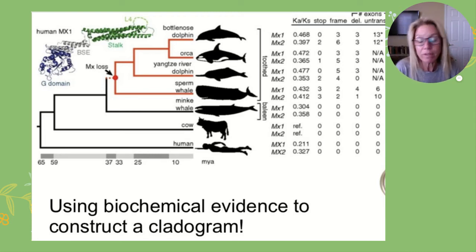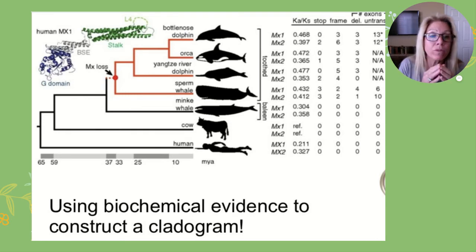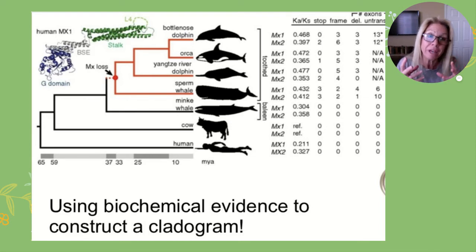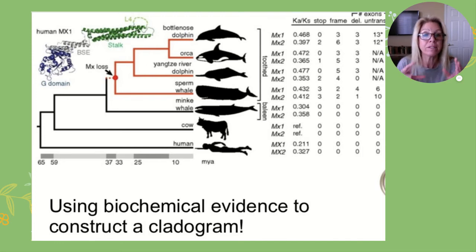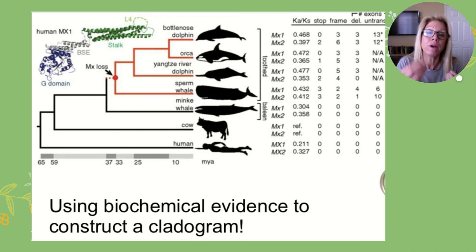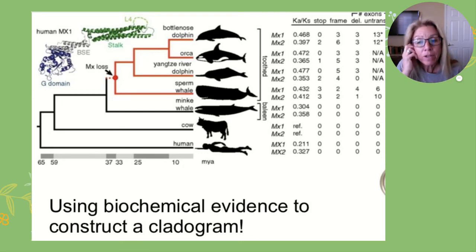Be very careful of convergent evolution — you don't want to use morphological traits if organisms are just solving their problem in the same way independently. You can use morphology or even behavior, but what's really good to use is biochemical evidence. Biochemical evidence shows you the evolutionary pathway taken by the number of differences — such as mutations — between you and another related species.